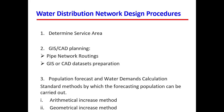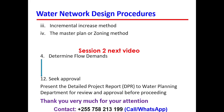The third step is population forecasting and water demand calculation. There are several methods by which population forecasting can be carried out. Among those are the mathematical increase method, the geometrical increase method, the incremental increase method, and the master plan or zoning method.